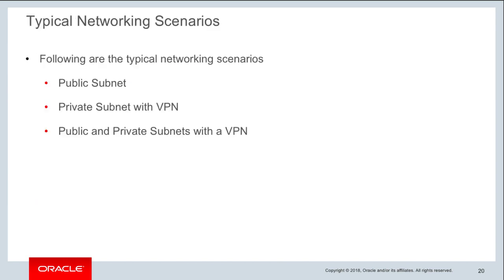This completes our section on IPSec VPN. We covered what IPSec VPN is, how to create an IPSec connection using the VPN service, the different single-site and multi-site deployment scenarios, the different redundancy models, and some best practices. Now let's move on to typical networking scenarios we see when talking to customers.